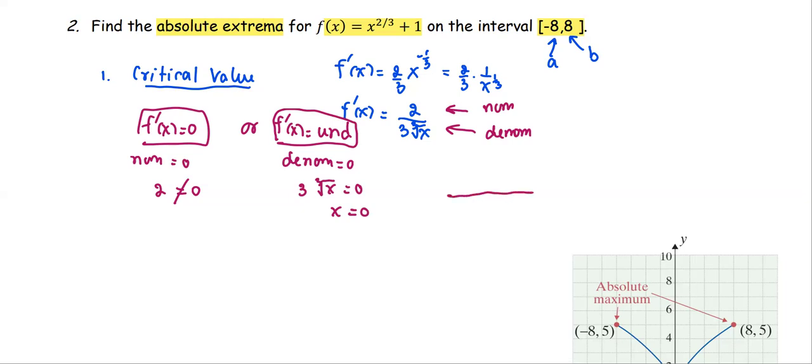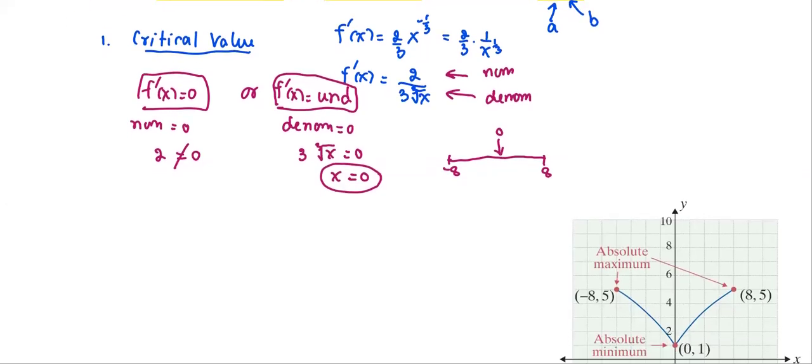by checking the value, whether it is within the left and right end. The left end is negative eight. The right end is positive eight. The value zero is somewhere in between. So now we obtain one critical value, which is at x equals zero.